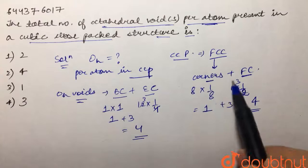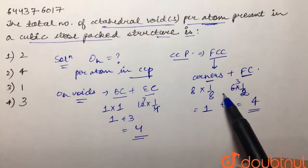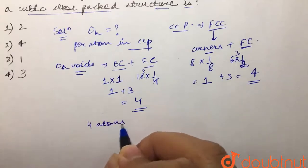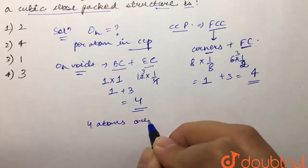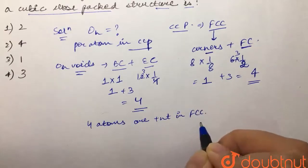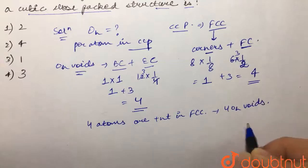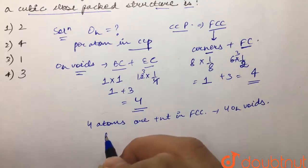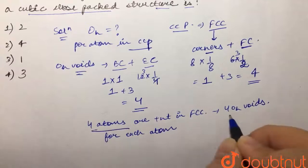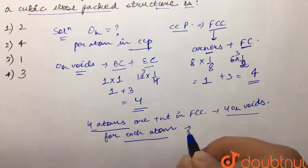So what we can write is that four atoms are present in FCC, and we have four octahedral voids present in it. So for each atom, for four atoms we have four octahedral voids, and for each atom, that means one atom, there would be 4 divided by 4 multiplied by 1, that means equal to 1.